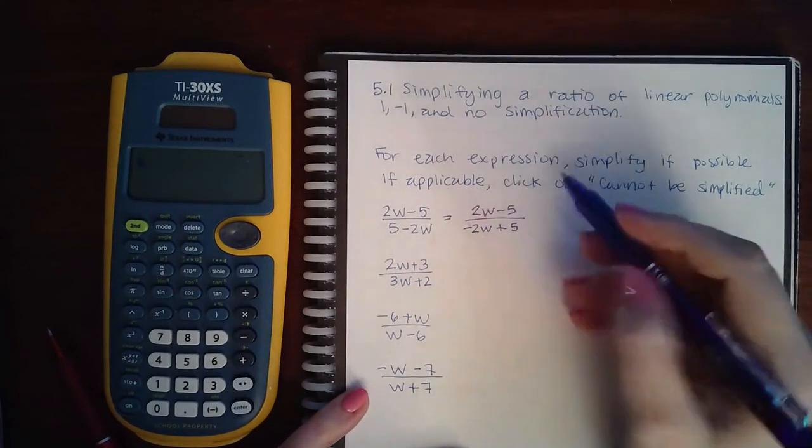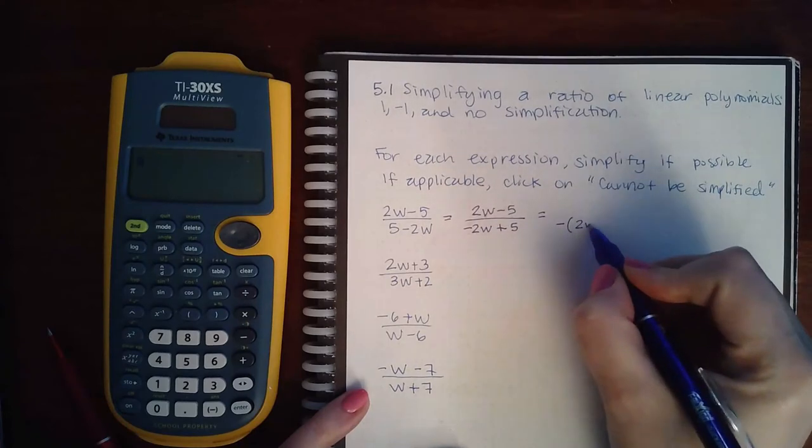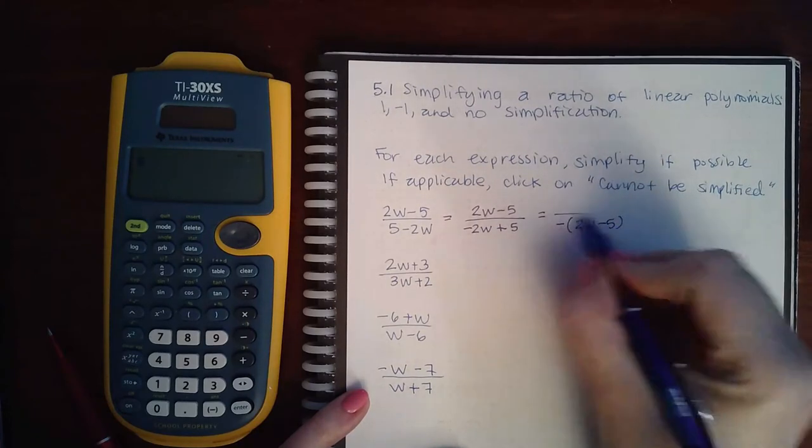When the first term is negative, you must factor out a negative. So I get 2w minus 5 in the parentheses.